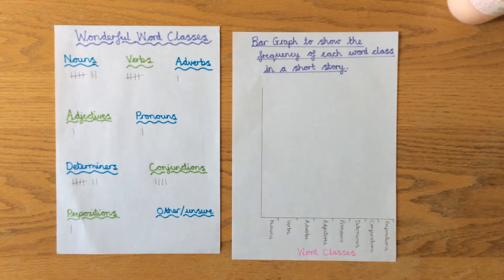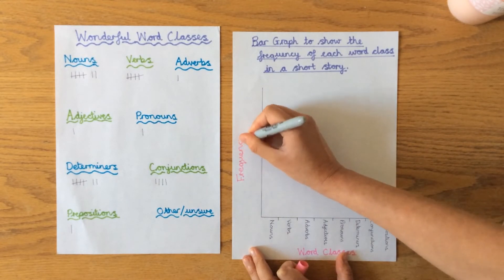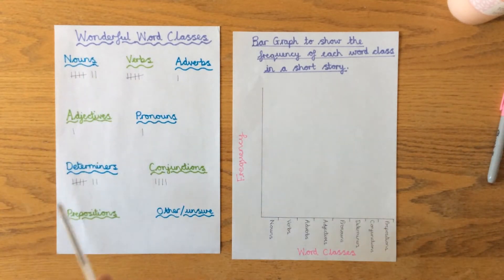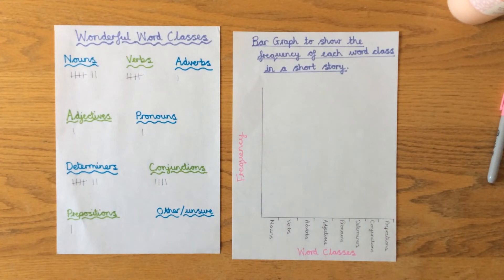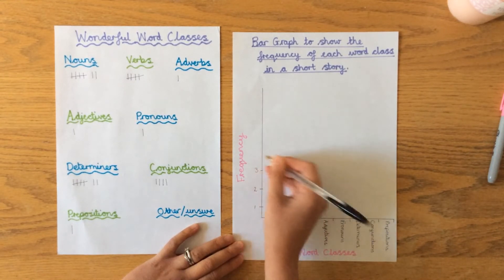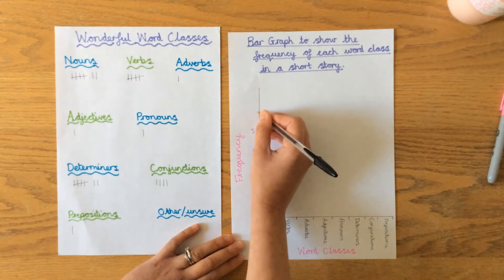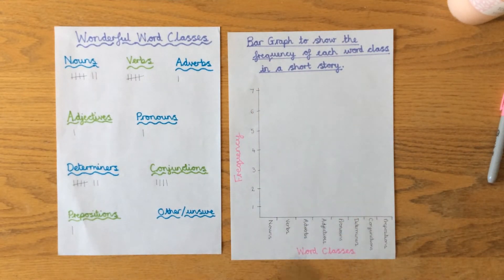Along the bottom I've got my word classes labeled and spaced out neatly. Along the side I'm going to do the frequency. I can label my axes 'frequency.' Now I need to come up with a scale. My most often was seven determiners and seven nouns, and my least often was one, so I need something between one and seven. I'm going to go up in ones: one, two, three — make sure they're evenly spaced, you can measure with a ruler — four, five, six, and seven.